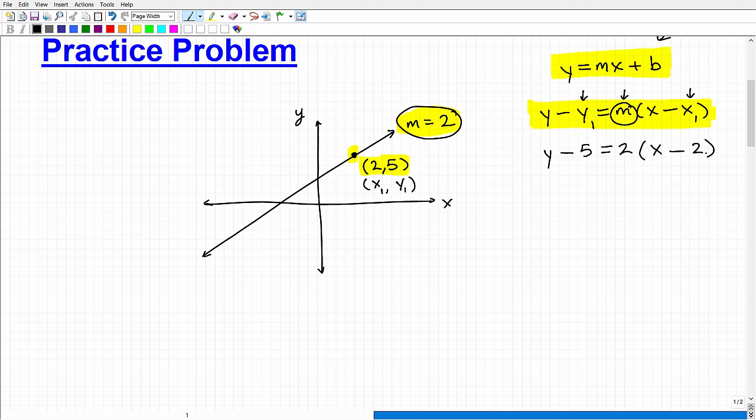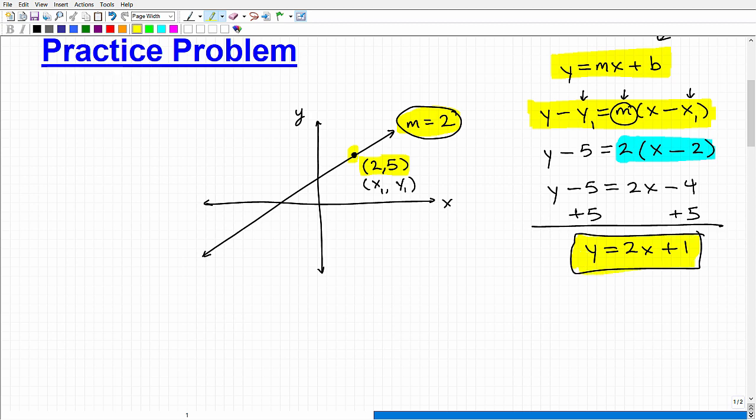Once we've done that, all we have to do now is to clean this up by using some algebraic magic. So the first thing you want to do is go ahead and apply the distributive property over here. Let's go ahead and do that now. So this would be y minus 5 is equal to 2x minus 4. And now I simply just need to go ahead and add 5 to both sides of the equation. And I get y is equal to 2x plus 1. And there you go. That is the final equation. That's the answer.